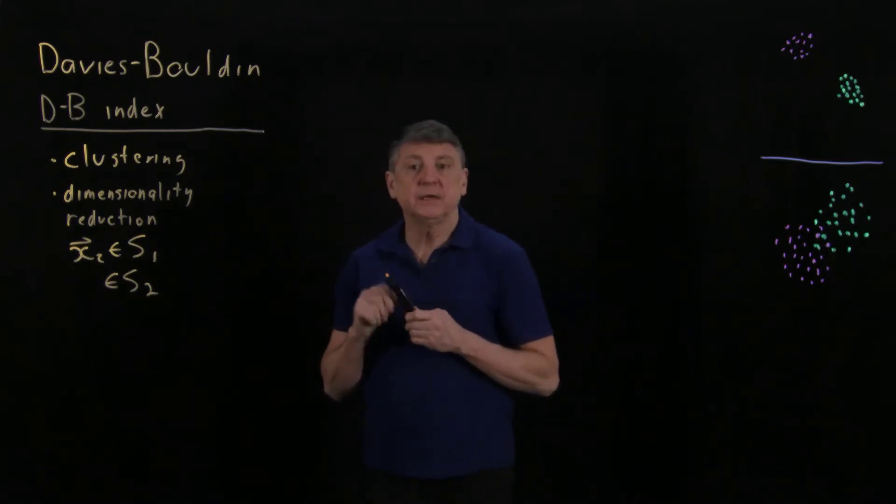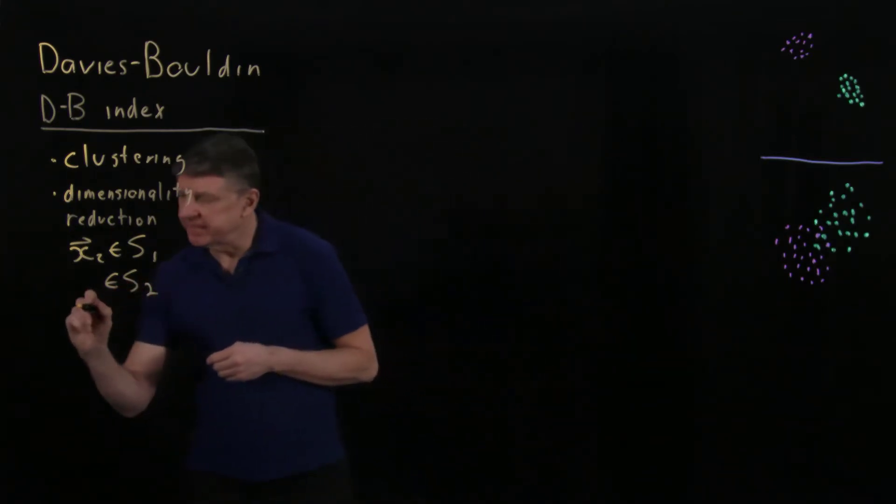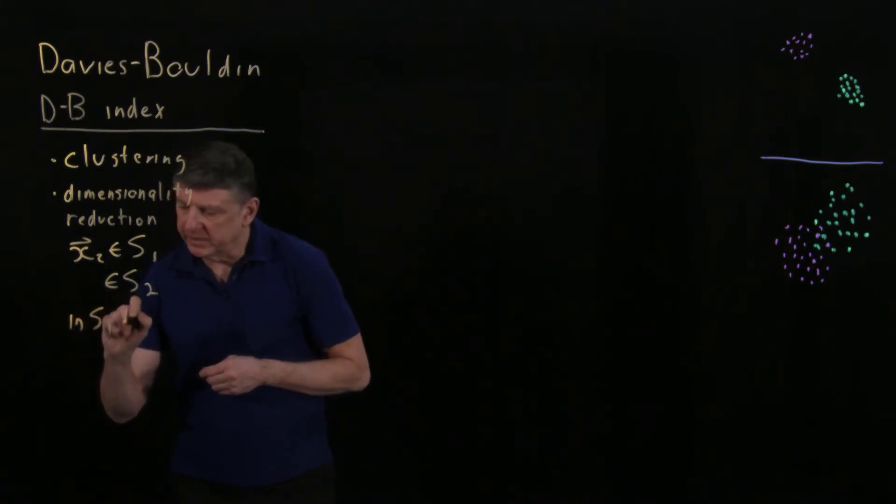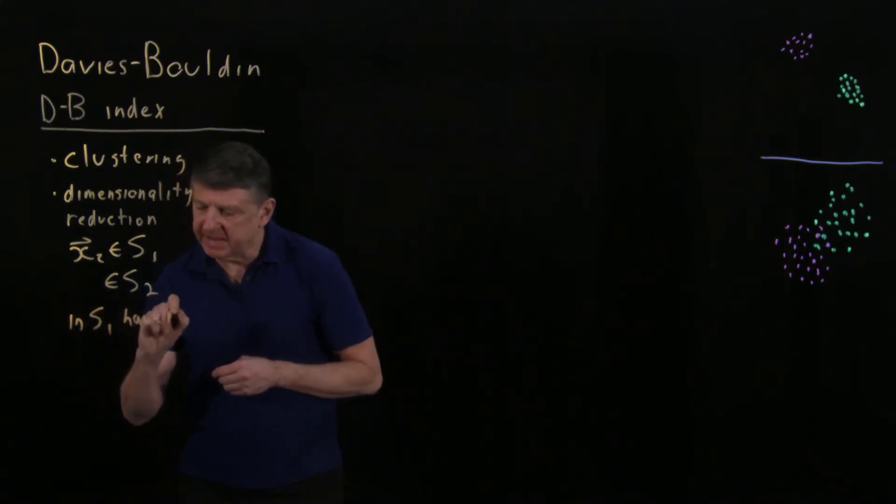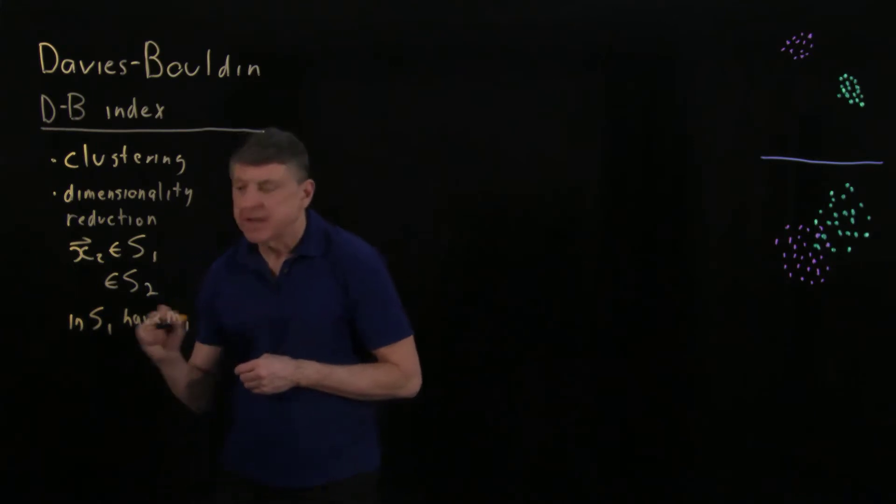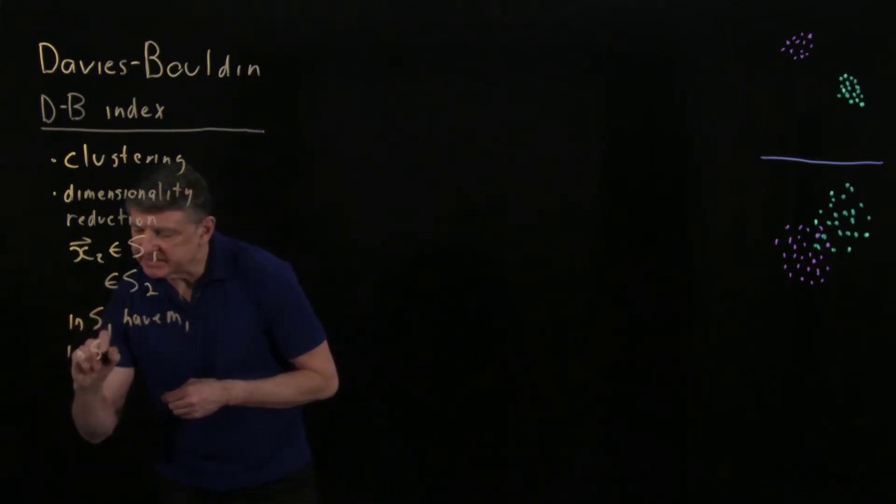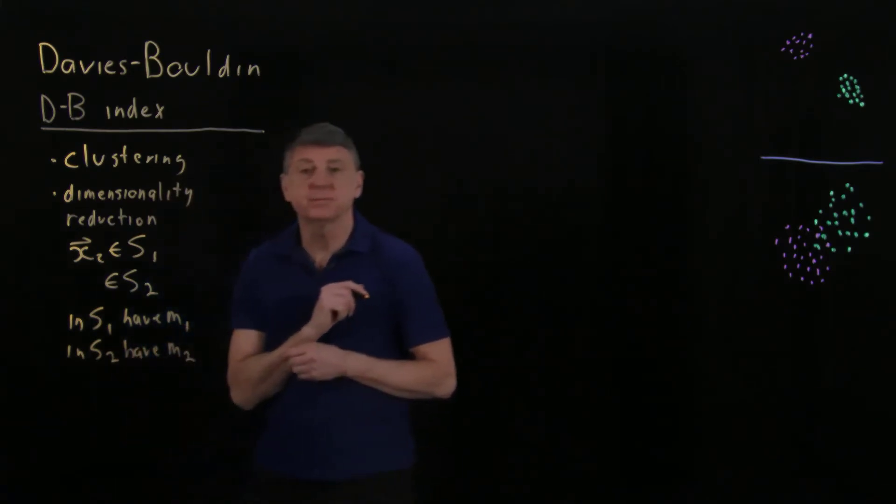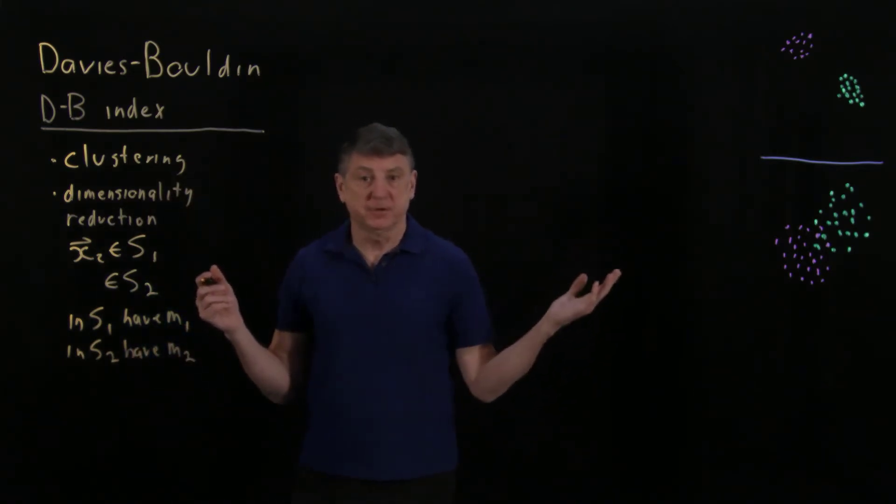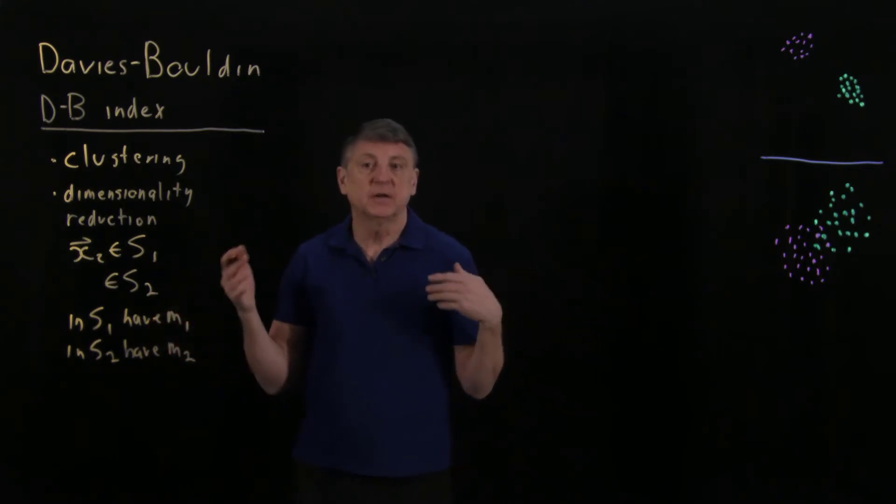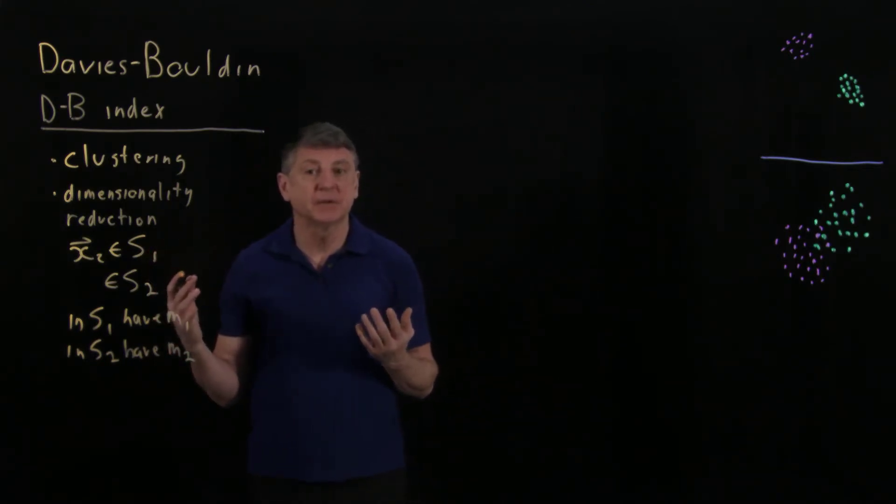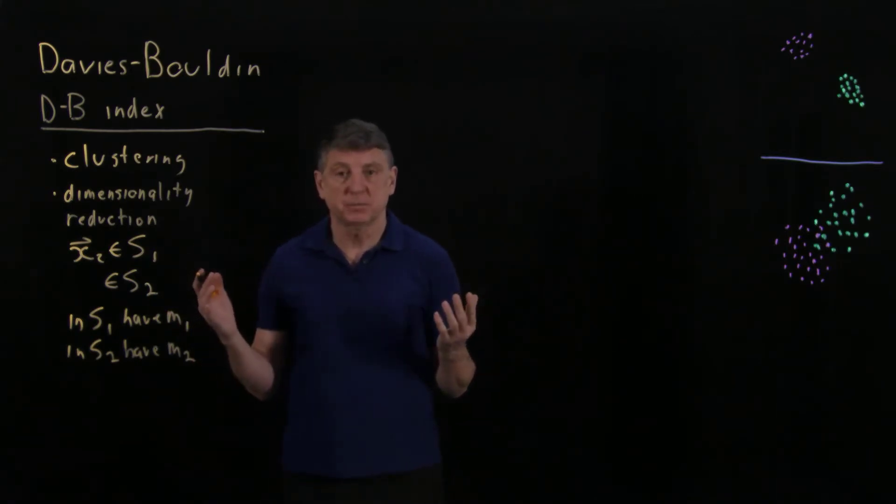Let's now be clearer. Let's suppose that in set one, we have m sub one members. And in set two, we have m sub two members. And these can be different sizes. But all the data vectors are more or less the same. And we need that similarity so that we can do some computations.